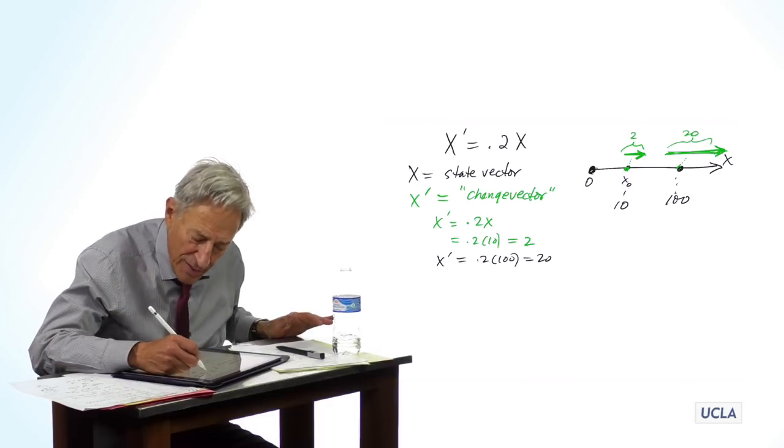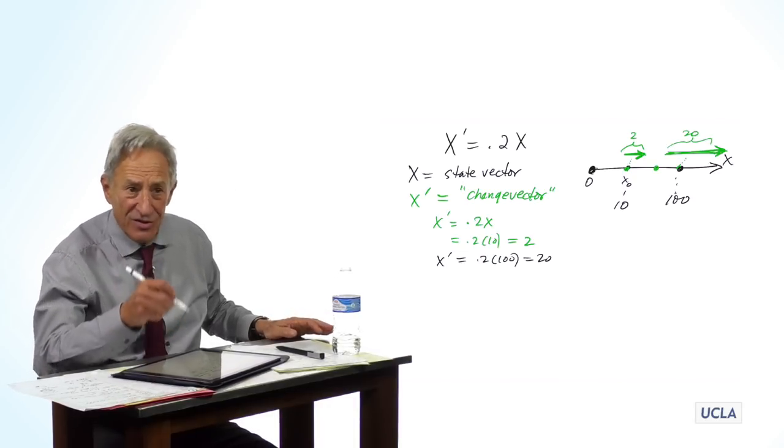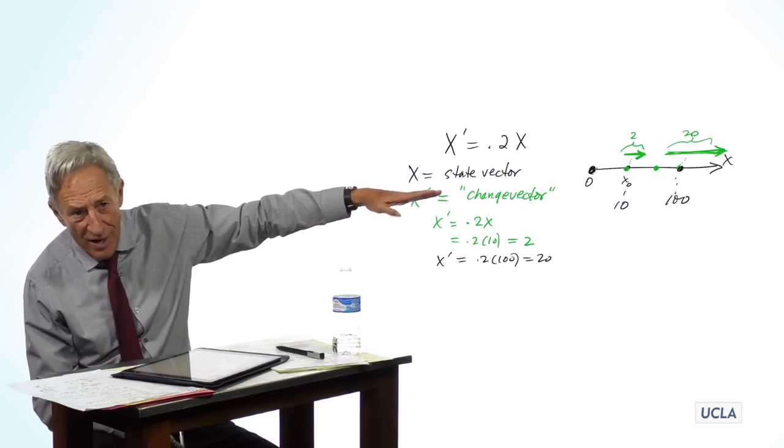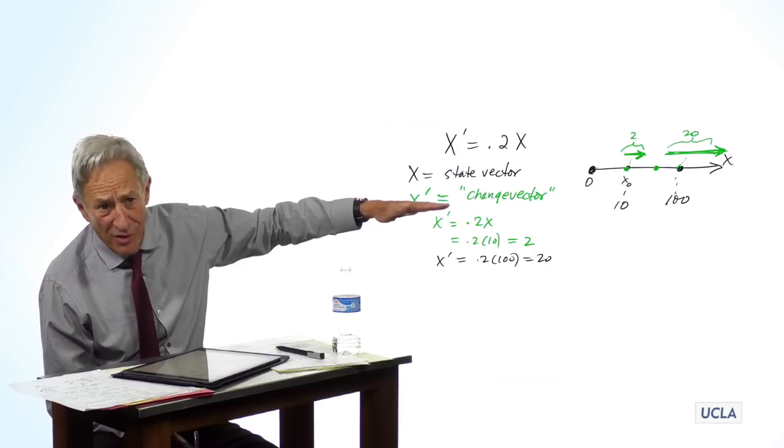And then the change vector at that point is going to tell you, again, move to the right. Only move to the right at an even faster rate.